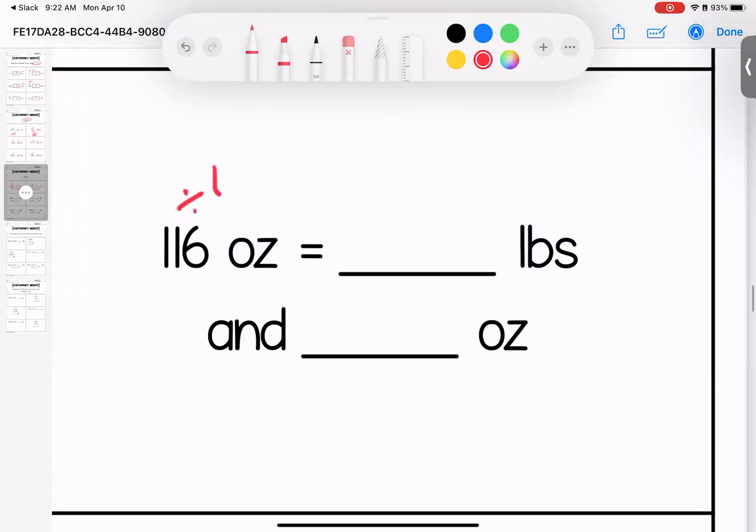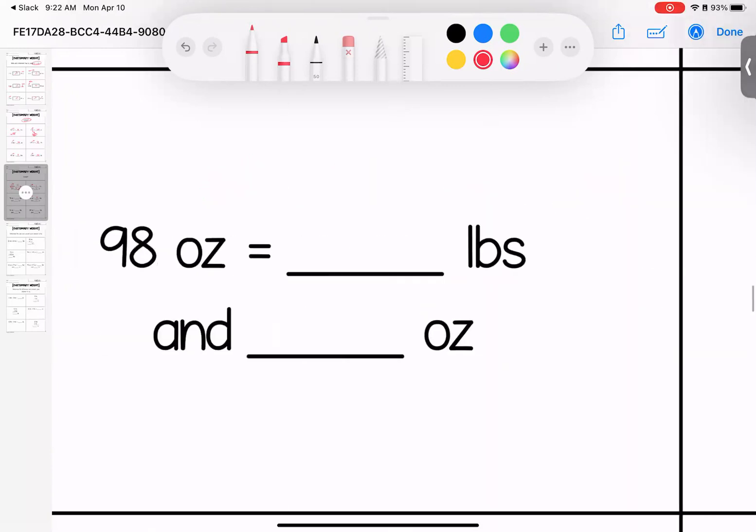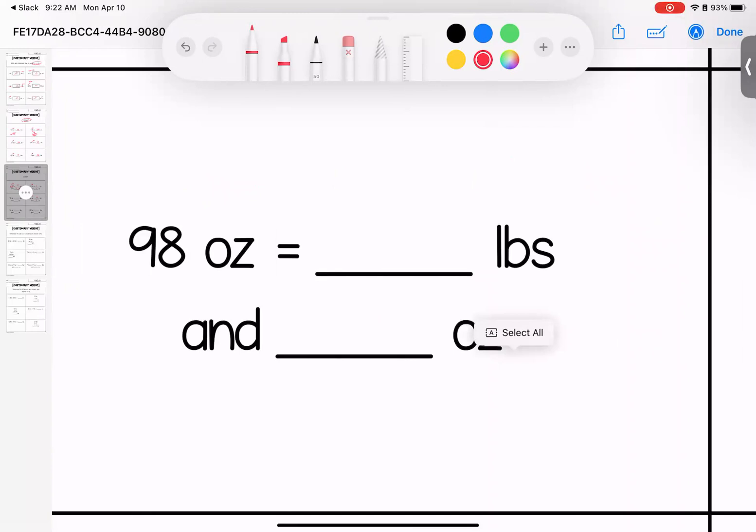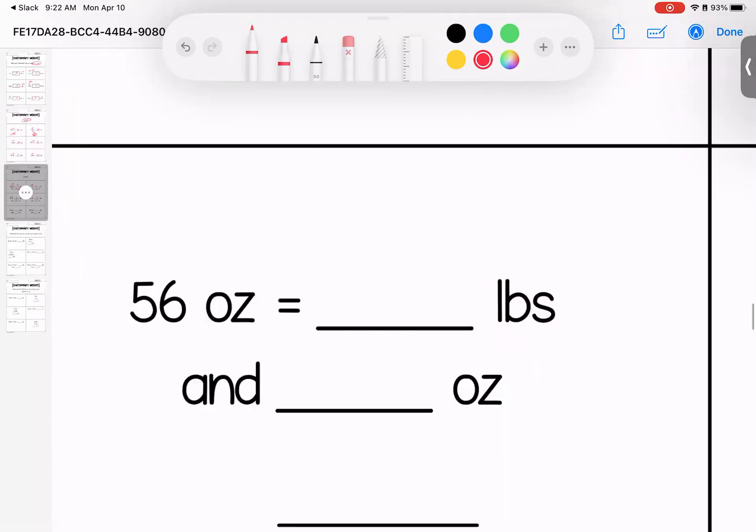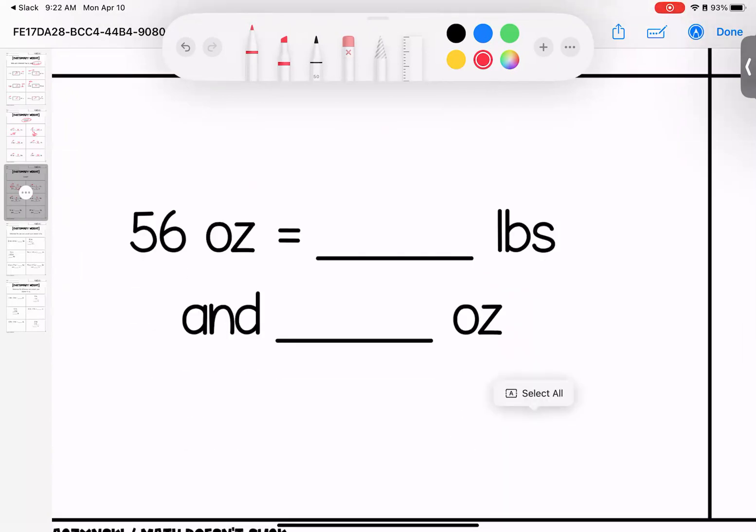Ounces to pounds. I have to divide this by 16. When I do 116 divided by 16, it goes in seven times evenly, but that's not going to leave me without a remainder of four ounces. Up here, 98 divided by 16. Again, doing pounds to ounces. It goes in evenly six times, and it leaves me with two ounces left over. Down here, 56 ounces. Again, same strategy, dividing by 16. It goes in three times, and it leaves me with eight ounces.